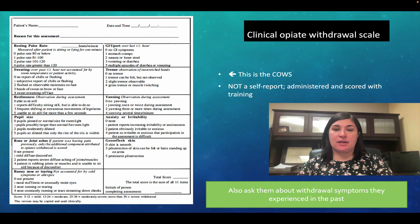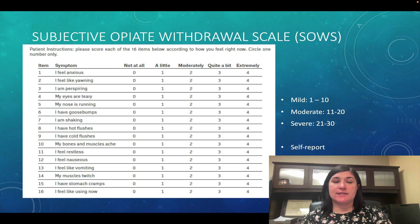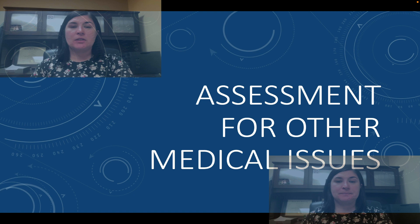Another assessment tool is the Clinical Opiate Withdrawal Scale, or COWS. This is not a self-report — it is administered and scored with training. Then there's the SOWS, the Subjective Opiate Withdrawal Scale, which is a self-report and can give you an idea about mild, moderate, or severe withdrawal from opiates.